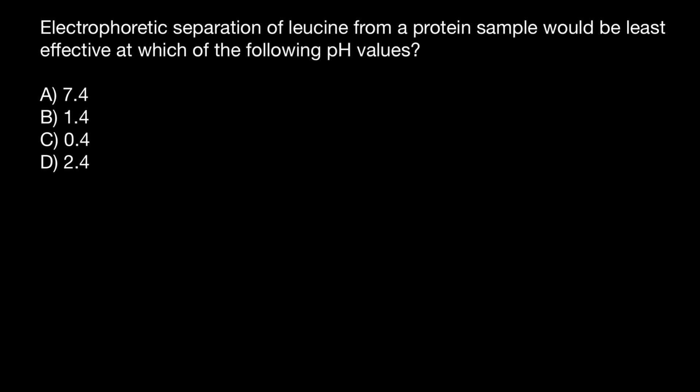Hello, and welcome to Nikolai's genetics lessons. Today's question is, electrophoretic separation of leucine from a protein sample would be least effective at which of the following pH values? And you have to choose one of these answers.